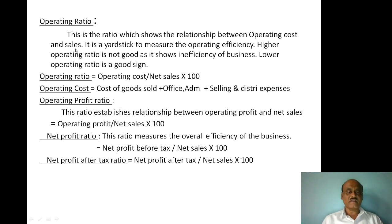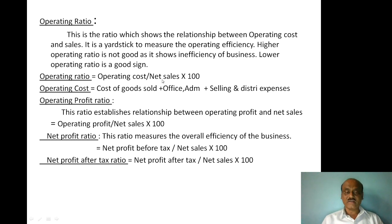The formula for Operating Ratio is: Operating Cost divided by Net Sales, multiplied by 100. Net sales is total sales — that is cash sales plus credit sales minus sales returns. Operating cost is the cost of goods sold plus office and administration expenses plus selling and distribution expenses.